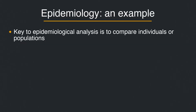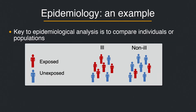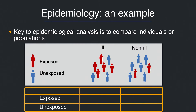The key to epidemiological analysis is to compare individuals or populations. For example, we have two groups: those that are exposed to a risk factor, in red, and those that are not, in blue. Researchers will observe how many individuals develop a disease and how many do not. In the table, we see that more individuals that were exposed to the risk factor developed the disease, while more individuals that were not exposed did not develop the disease.